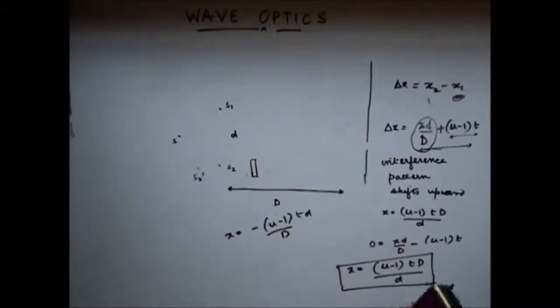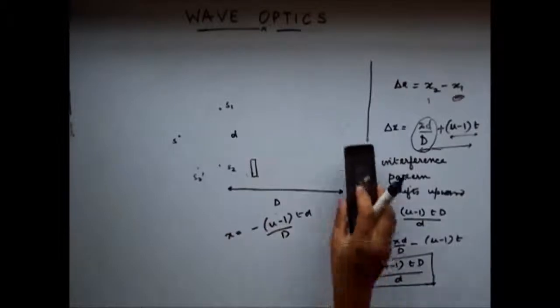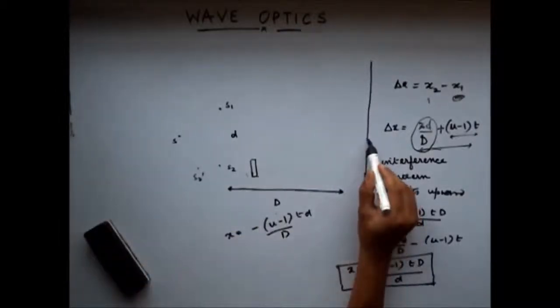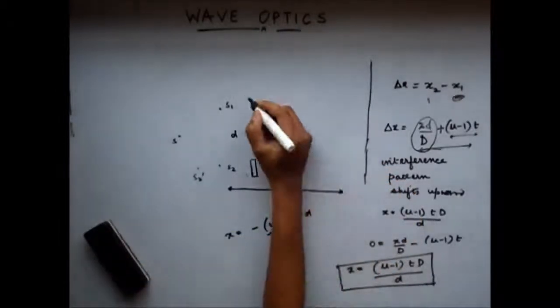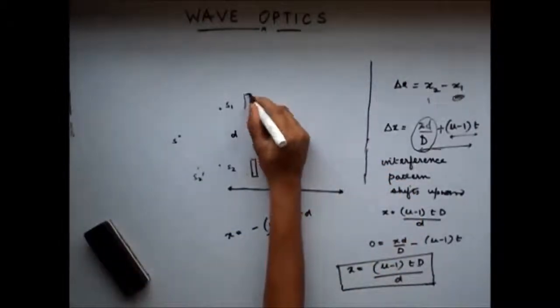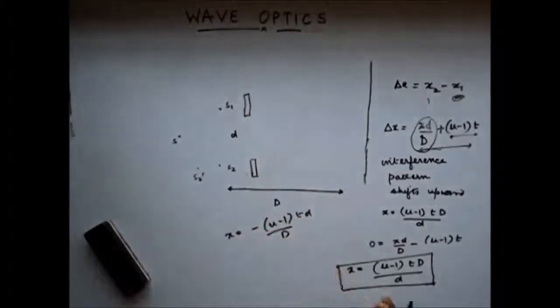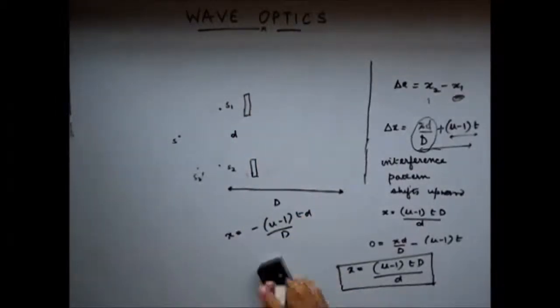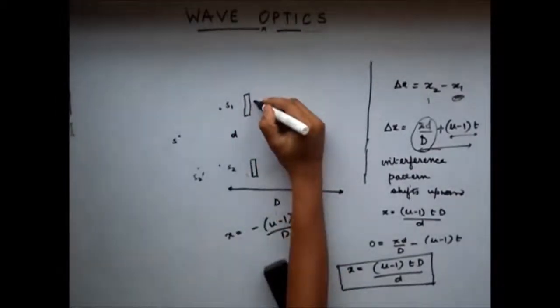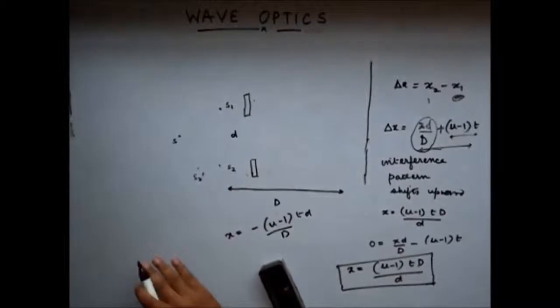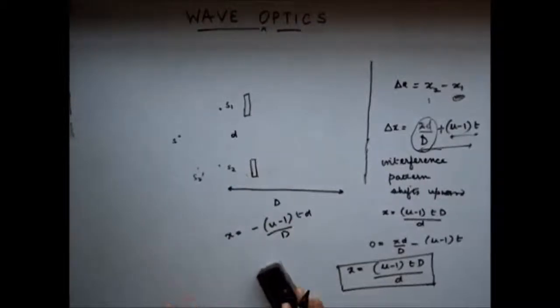To make the interference pattern shift back to its original position, I have to introduce a glass slab here also. The condition for the thickness of this second glass slab remains the same as we had discussed.